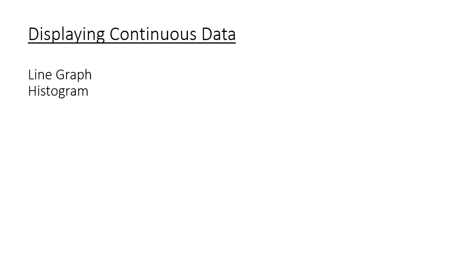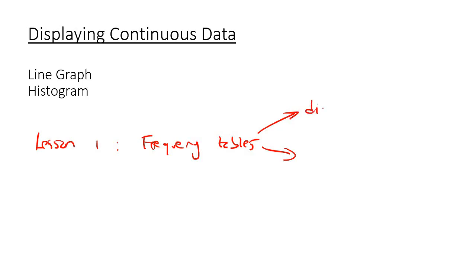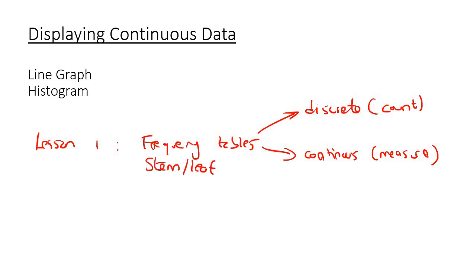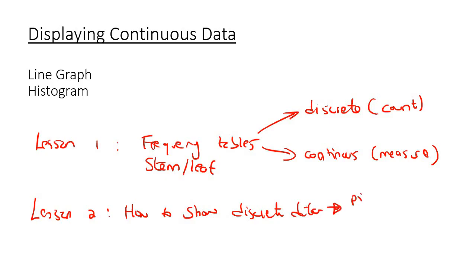What we've done so far in all of our lessons: in lesson number one, with data handling or statistics, we looked at frequency tables and two different types of data — discrete and continuous. With discrete, it's something you can count. With continuous, it was something you measure. Within that lesson, we also looked at stem and leaf diagrams. Then in lesson number two, we looked at how to show discrete data, and we used pie charts or bar graphs.